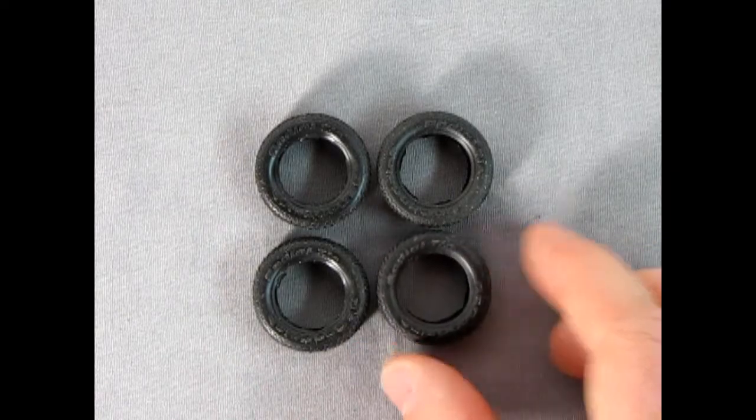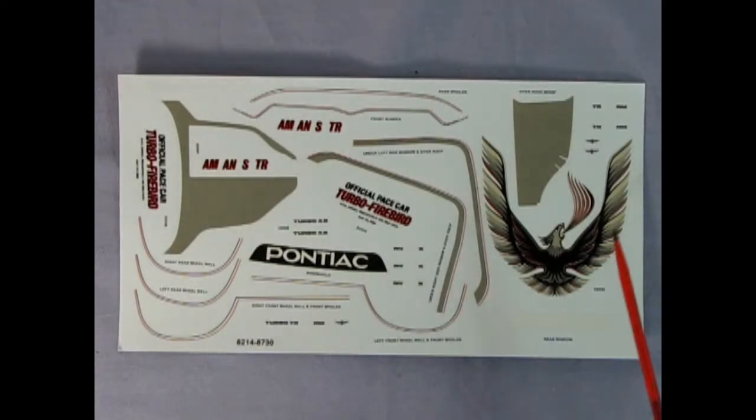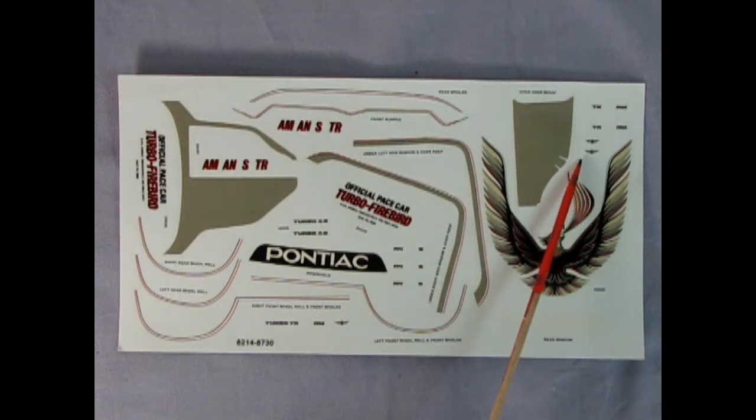Now here we have our decal sheet and I think this is the best feature of this entire model. You have the official pace car turbo Firebird decal for the door including what Indy race this one was. There's our Pontiac for the windshield - interesting it showed one going on the back glass but you only get the front one. There's our pinstripes going around the wheels and everywhere along the back, a nice Firebird in there. Really cool stuff.